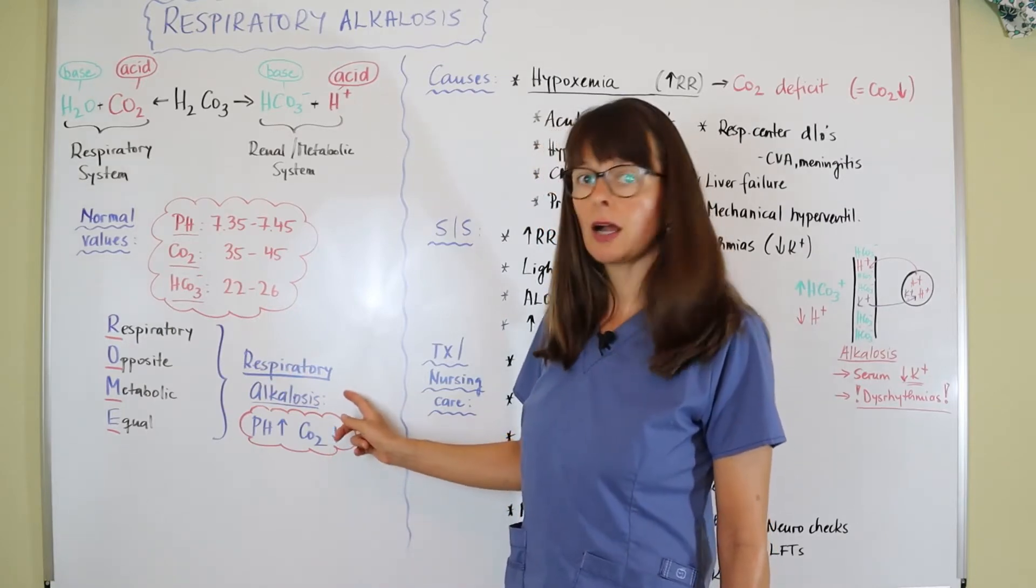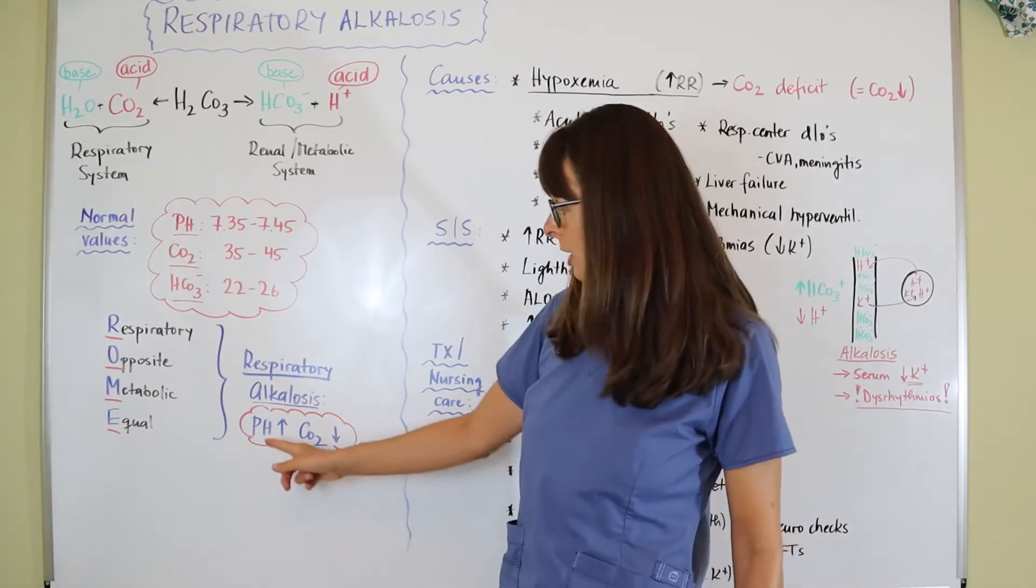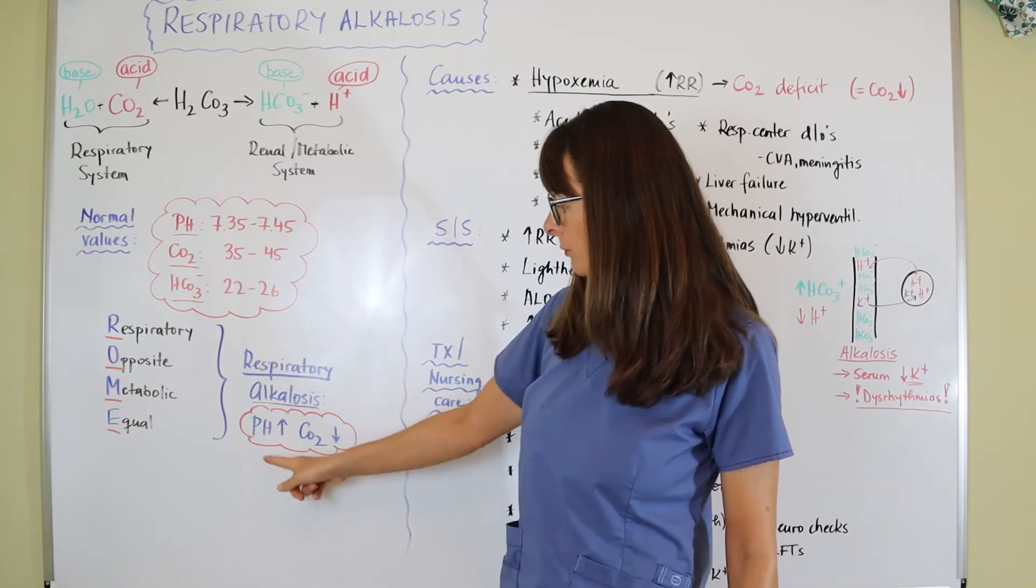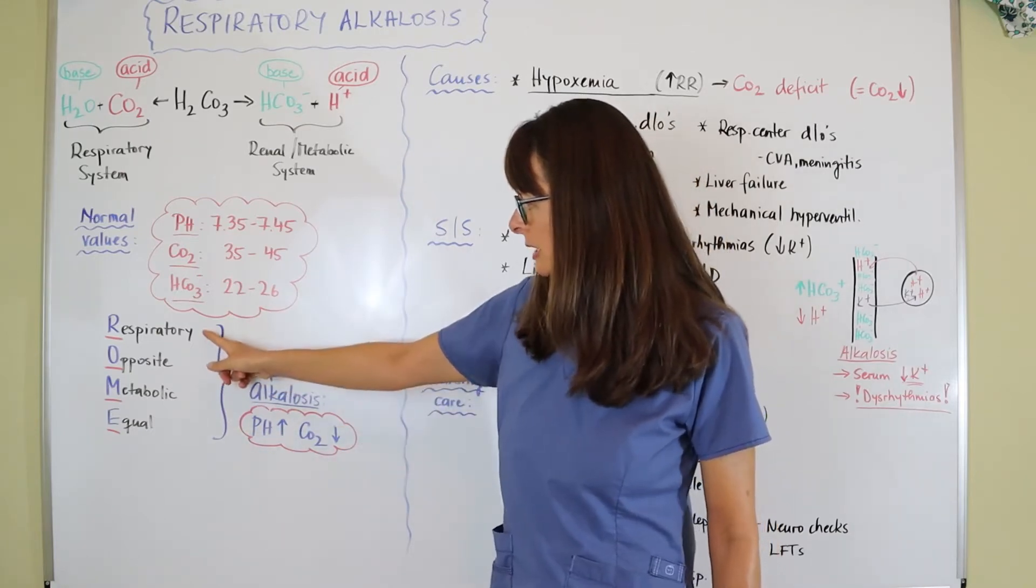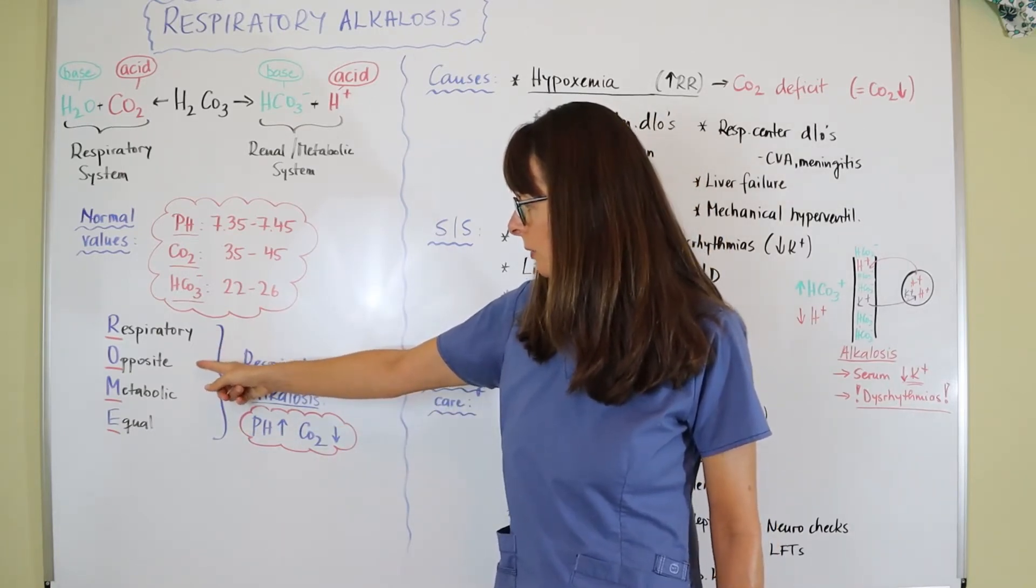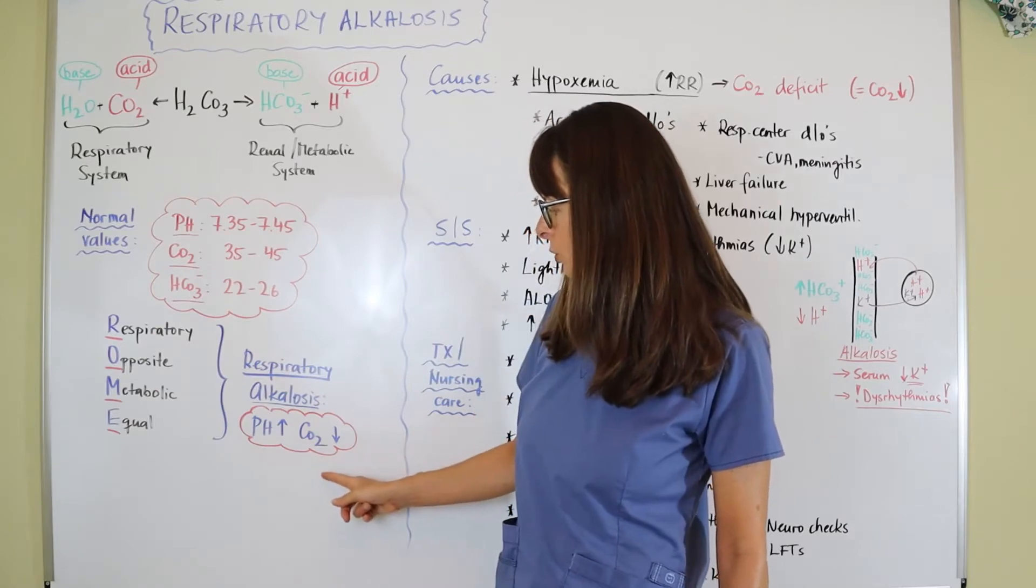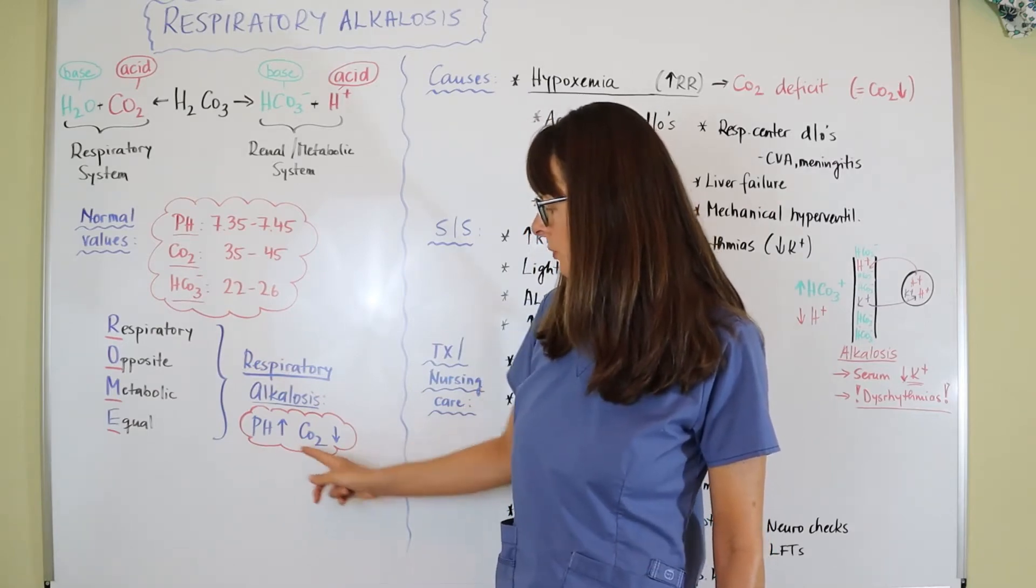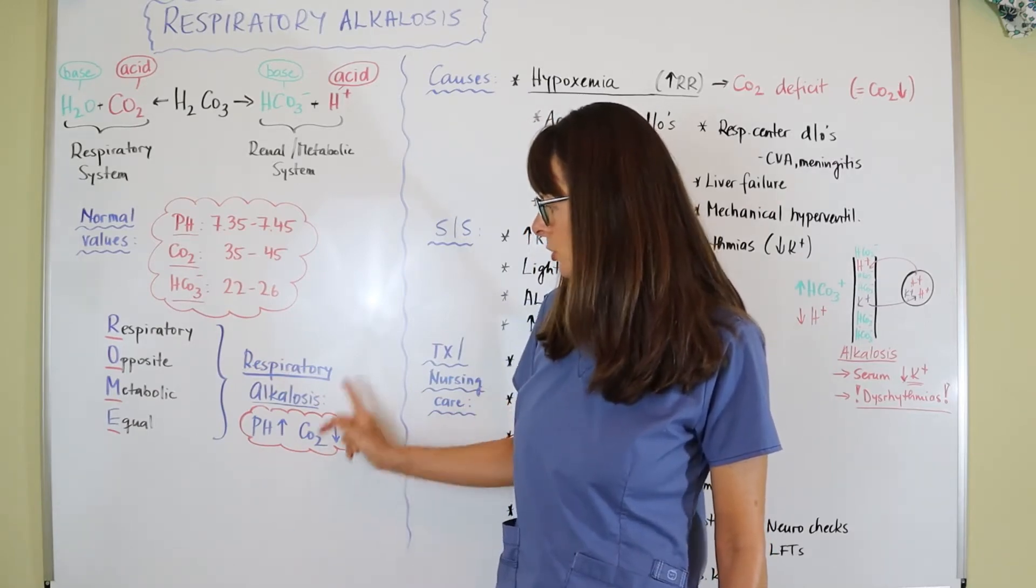For respiratory alkalosis, the pH is high, so it will be greater than 7.45. Because respiratory is always opposite the pH, the CO2 will be low, so the respiratory is opposite of the pH in respiratory alkalosis.